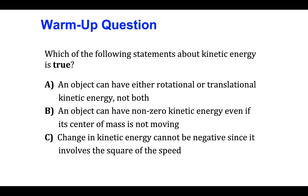Translational kinetic energy symbolized by K sub T and rotational kinetic energy symbolized by K sub R. So statement A, an object can have either rotational or translational kinetic energy, not both. Statement B, an object can have non-zero kinetic energy even if its center of mass is not moving.